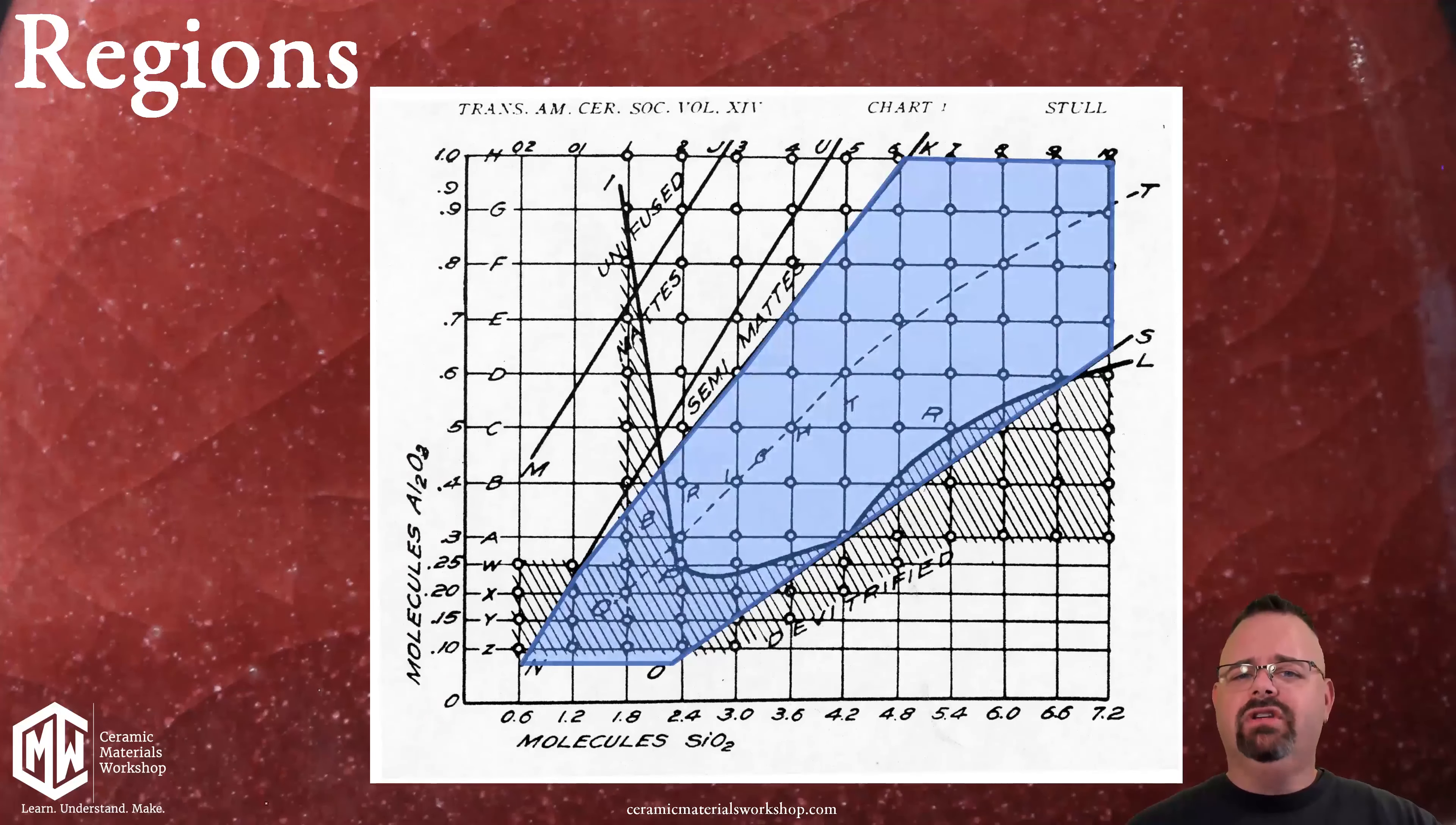Here in the middle the blue section is bright. Bright was Stull's term for glossy and what this is saying is that if you convert your glaze's formula to chemistry and it falls in this section it will be glossy. If there's discrepancies again you have to look to what's going on. What are the variables in there? But for the most part if your glaze falls inside the glossy section of the map it will be glossy.